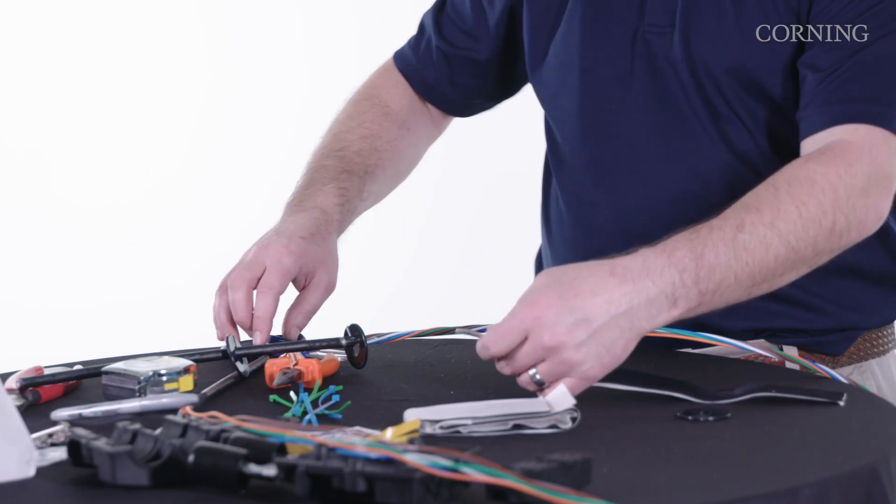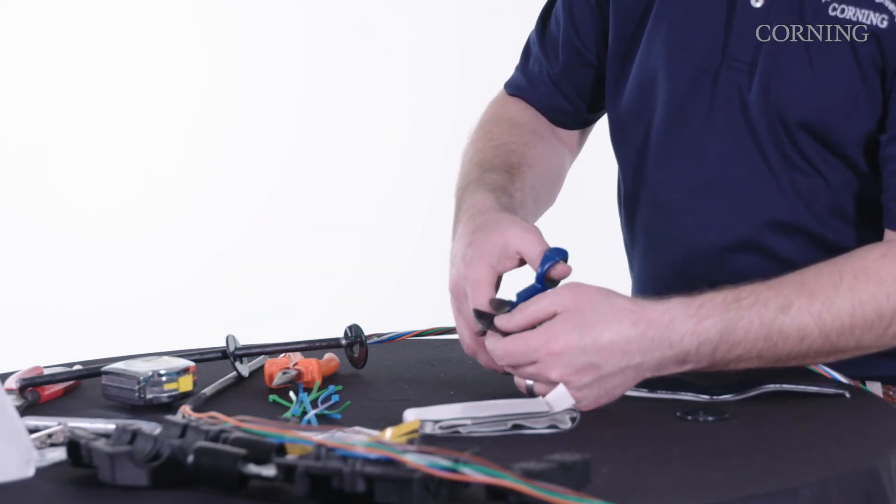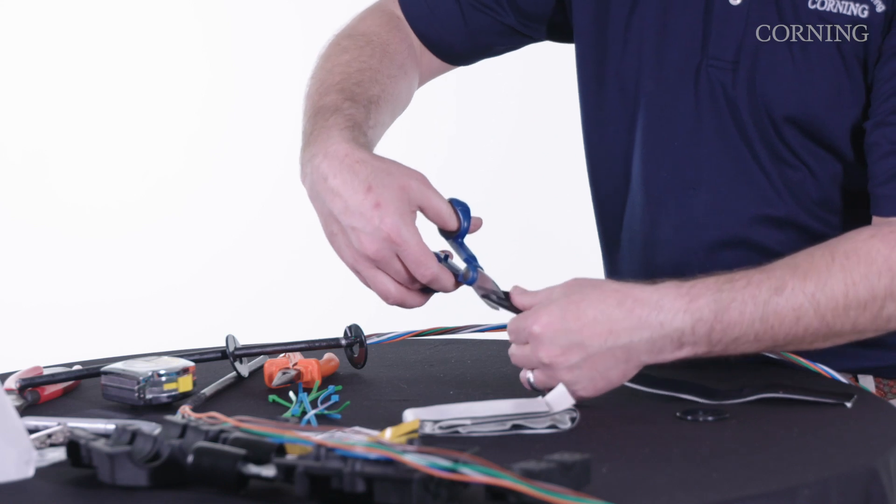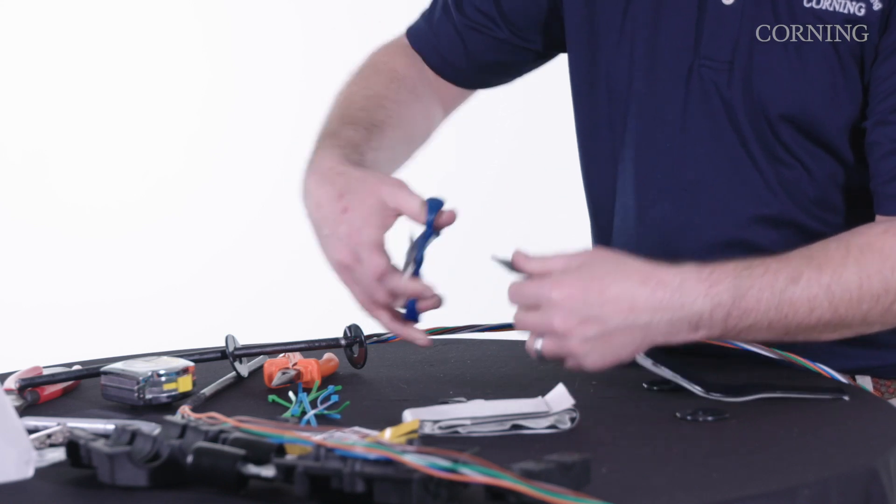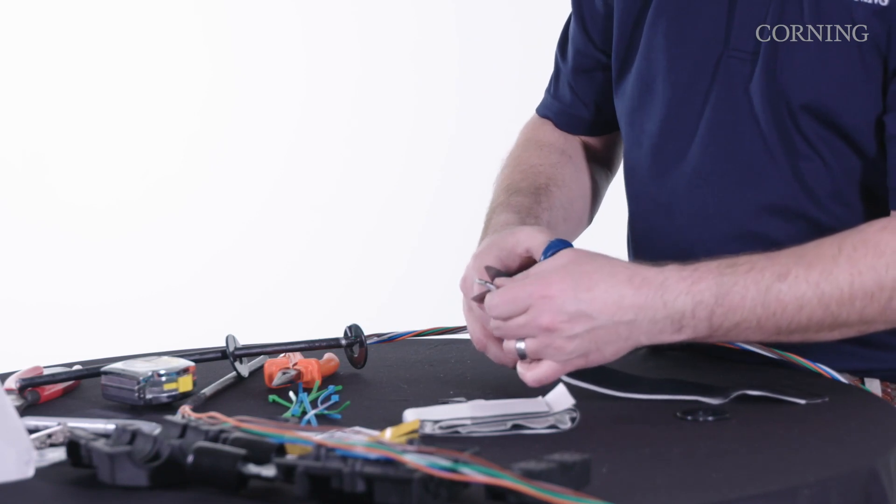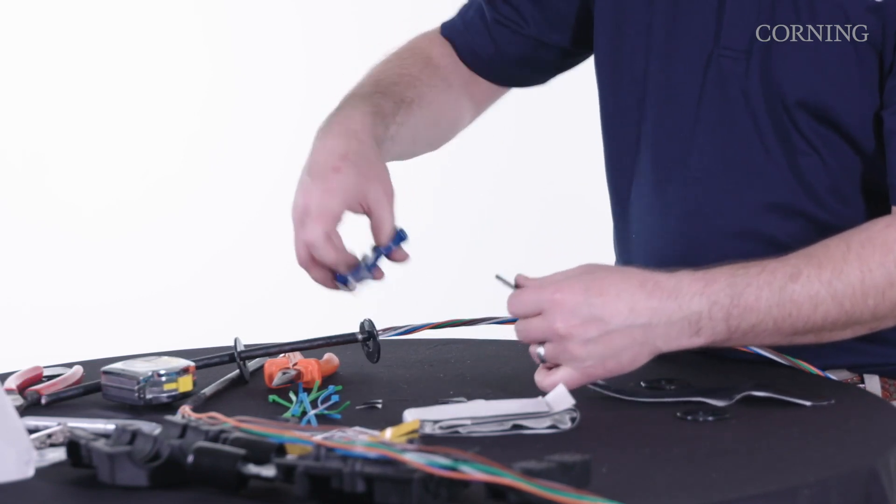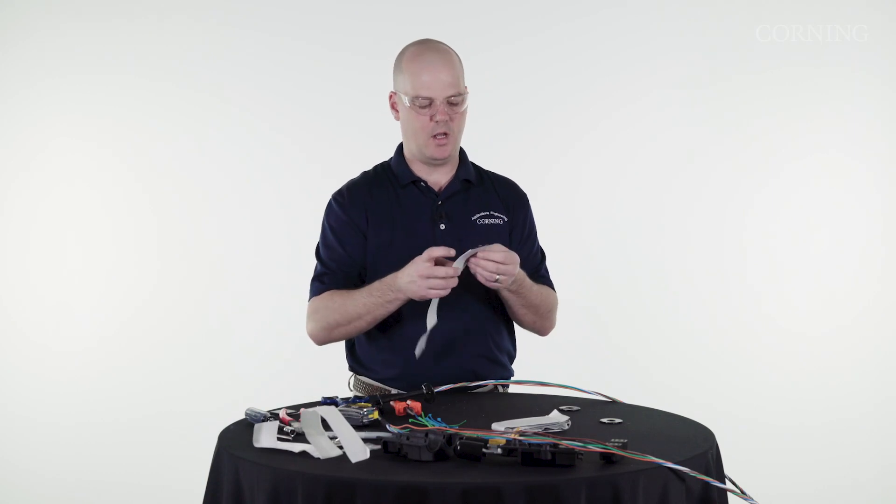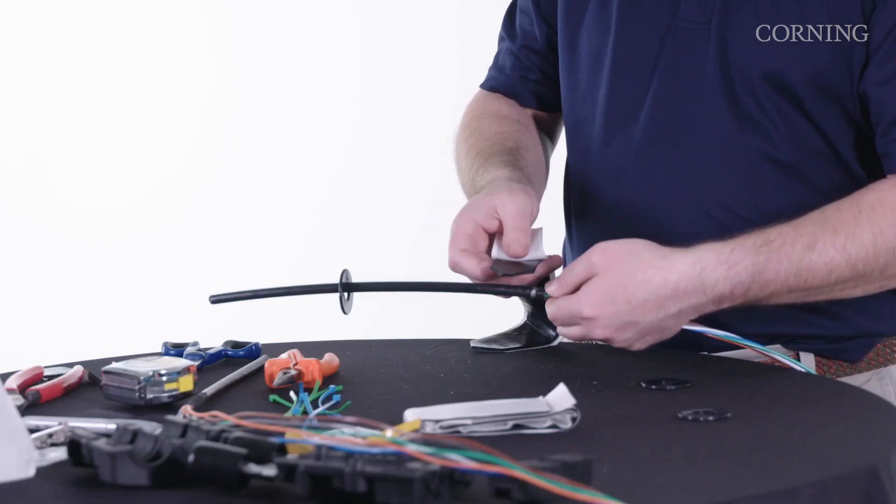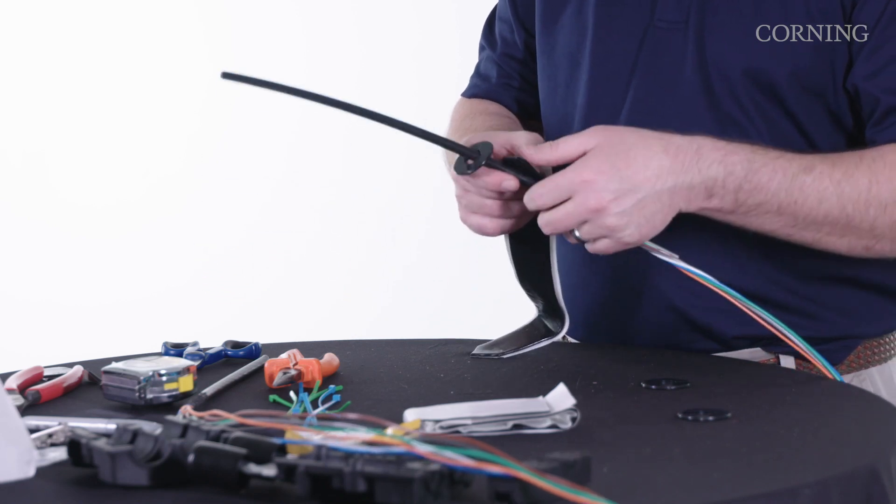Discard that portion. Now, go ahead and cut these at an angle. Now, what you're going to do is wrap up against this line you just made. Keep it nice and tight on top of each other.